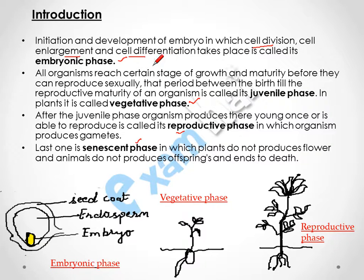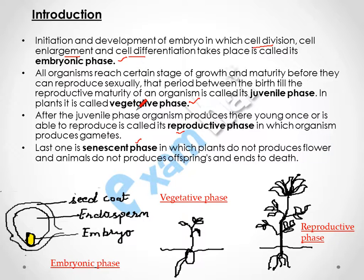So in the embryonic phase, the cell divides, becomes enlarged, and differentiates. After that comes the vegetative phase, which is the period between birth and the reproductive maturity of an organism. In the vegetative phase, the organism is not reproductively active, but it reaches a certain maturity after which it becomes reproductively active and is able to produce new offspring.